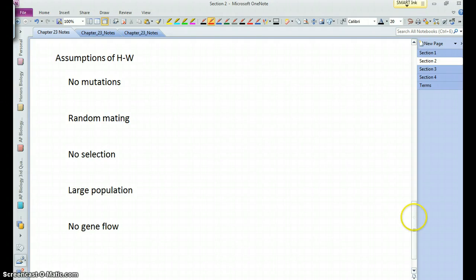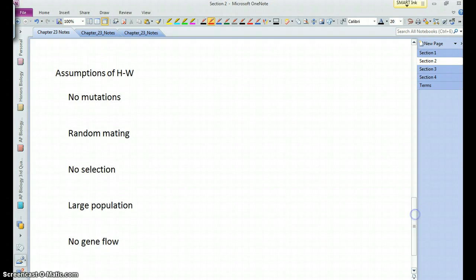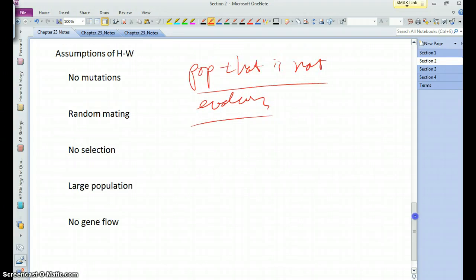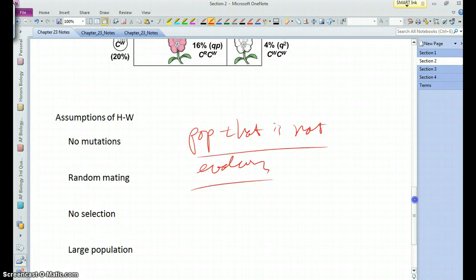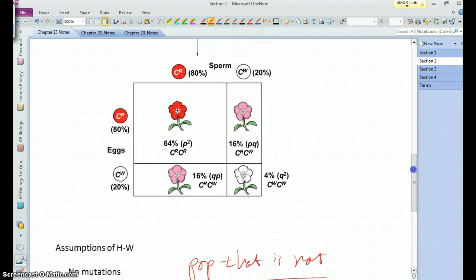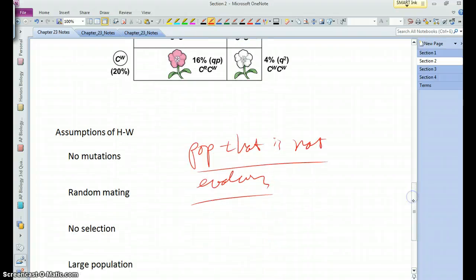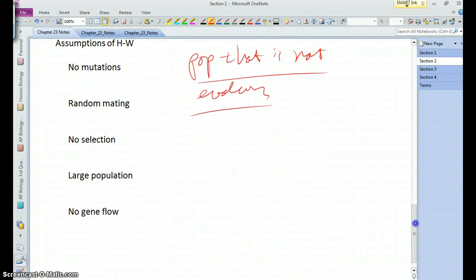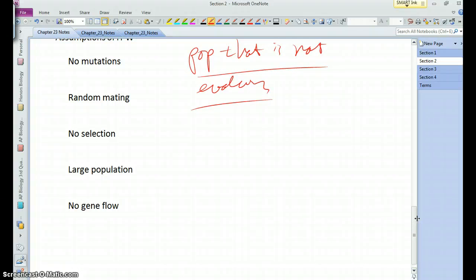So, when you look at these, essentially what these all equate to is a population that is not evolving. So, Hardy-Weinberg applies to populations that are not evolving. Okay. So, you may ask yourself, alright, well, how often does that apply? Is there ever a population that's not evolving?